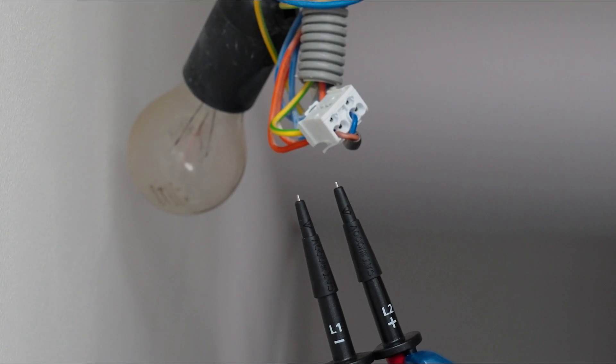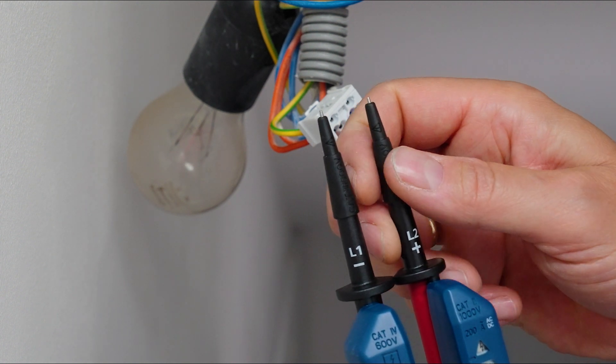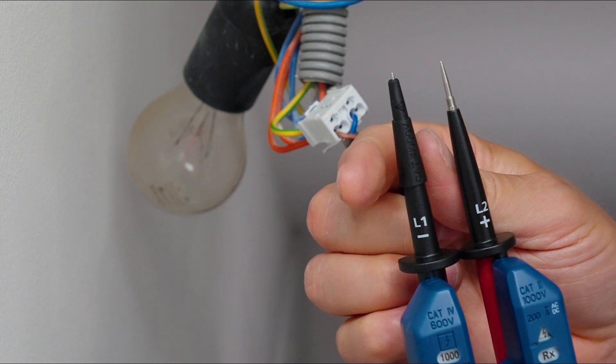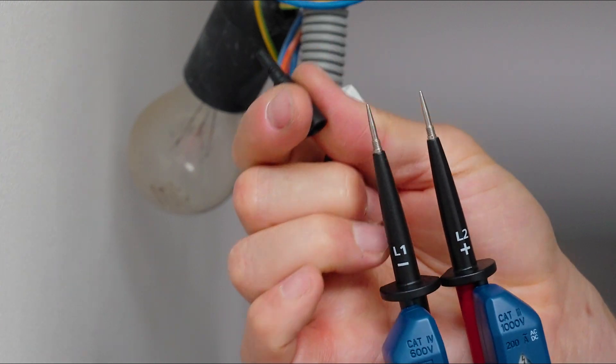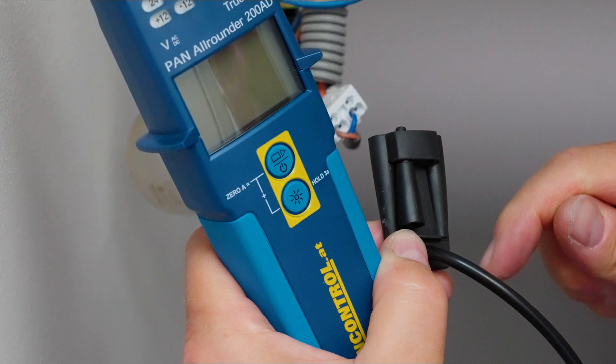To check terminals for continuity or voltage, first we remove the protective caps, which we needed before in the switch cabinet, and store them safely in the holder on the cable.